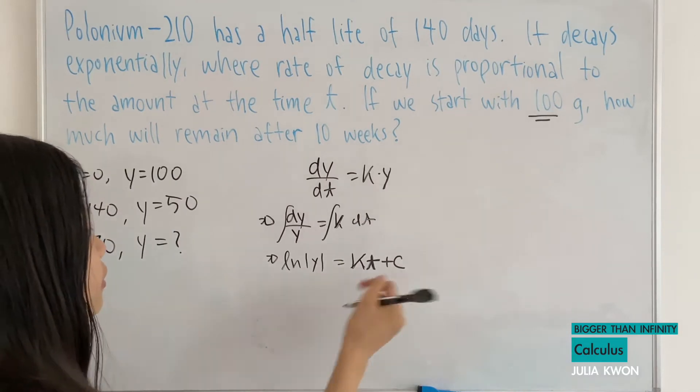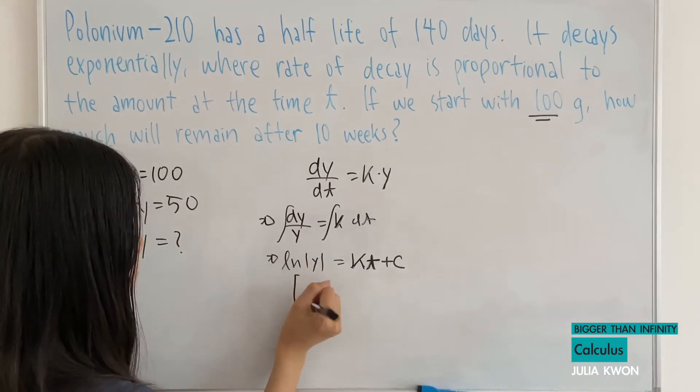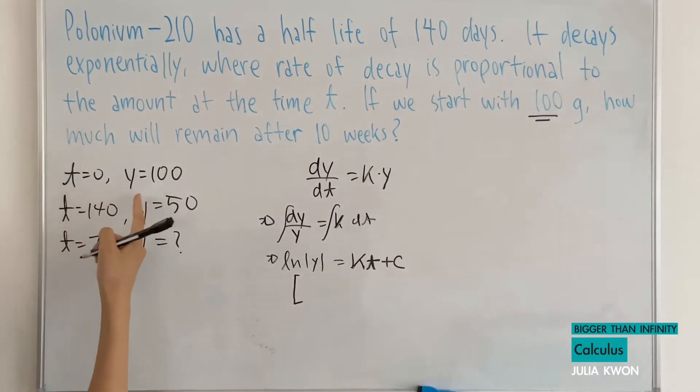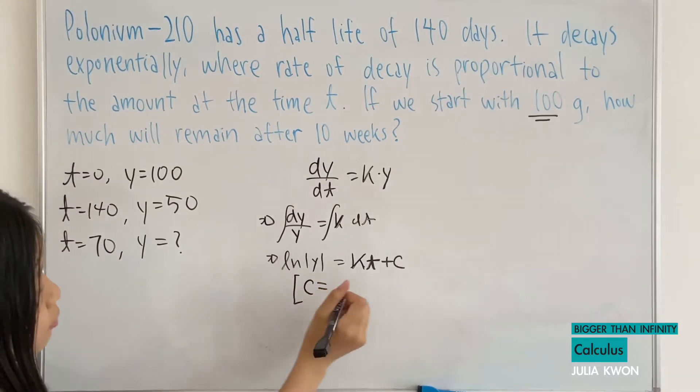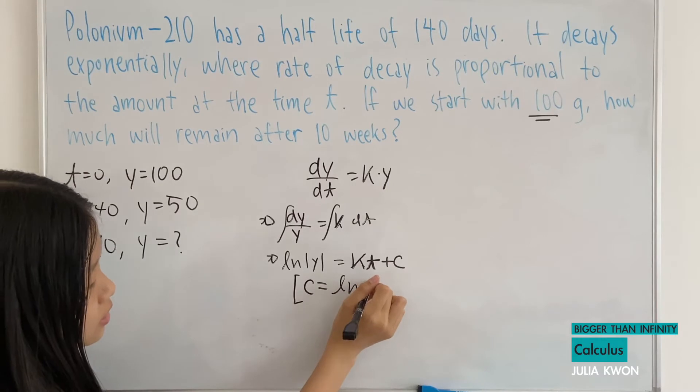We can solve for the constant by using what we wrote here. When t is equal to 0, y is equal to 100. If we put in t is equal to 0, that's just 0. So c will be equal to ln of y, which is ln of 100.